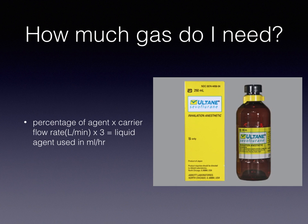How much gas do you need? You can find this out with a simple formula: take the percentage of agent used — say 2% sevoflurane — times the carrier flow rate in liters per minute — say 2 L/min — times 3, and that equals the agent used in milliliters per hour. Multiplying those three variables: 2% × 2 L/min × 3 = 12 mL/hour of liquid sevoflurane. This is why it's critical and cost effective to lower those carrier flow rates.